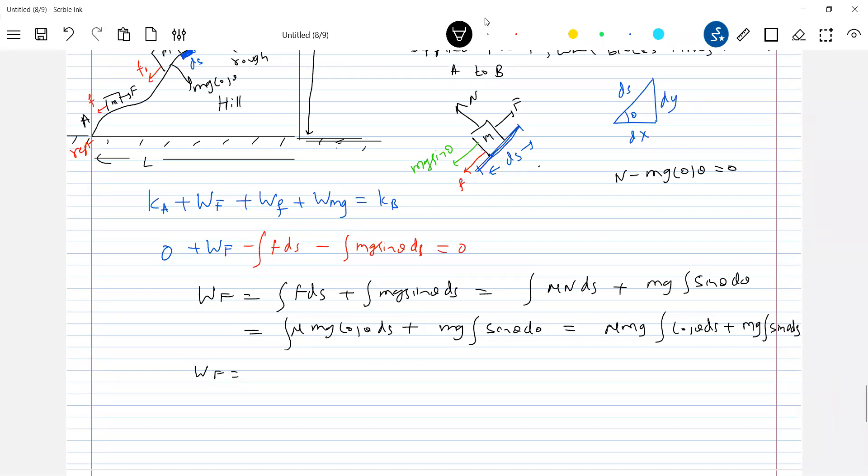From the diagram what is cos theta you can write it as dx by ds and sin theta as dy by ds. So this will be mu Mg, so in place of cos theta ds what I can write, dx. In place of sin theta ds I write it as dy. So finally when it moves from A to B what is the net displacement?